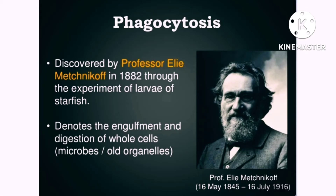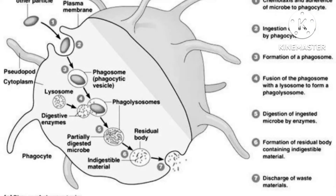The process by which foreign particles are digested is known as phagocytosis. This phenomenon was discovered by Professor Mechnikov in 1882 in the larvae of starfish. It denotes the engulfment and digestion of whole cells, microbes, or old organelles entering the cell. The endosome combines with the primary lysosome, which is synthesized by ribosomes of the rough endoplasmic reticulum, forming the phagosome and eventually the tertiary lysosome.